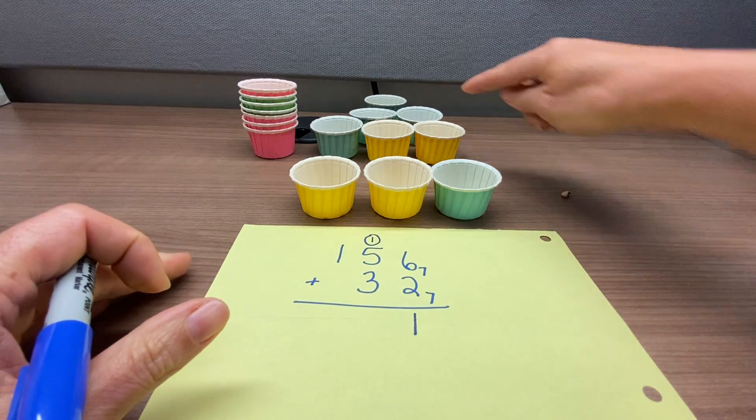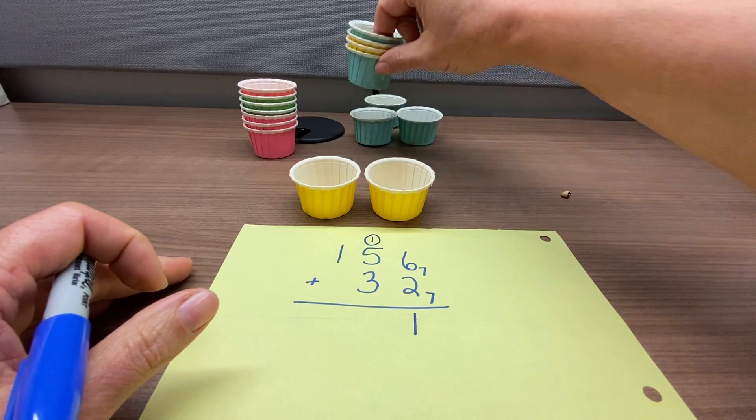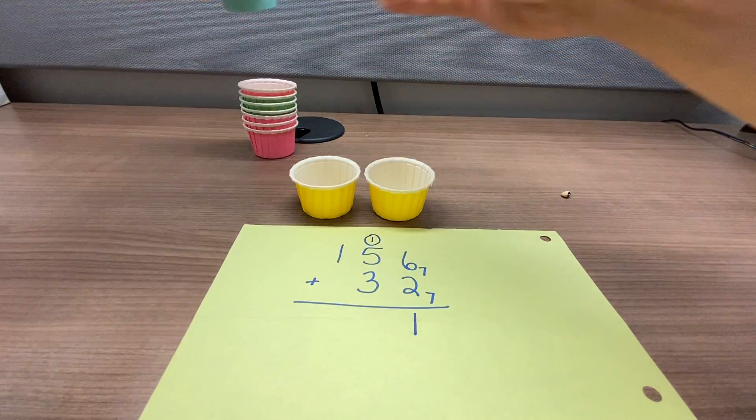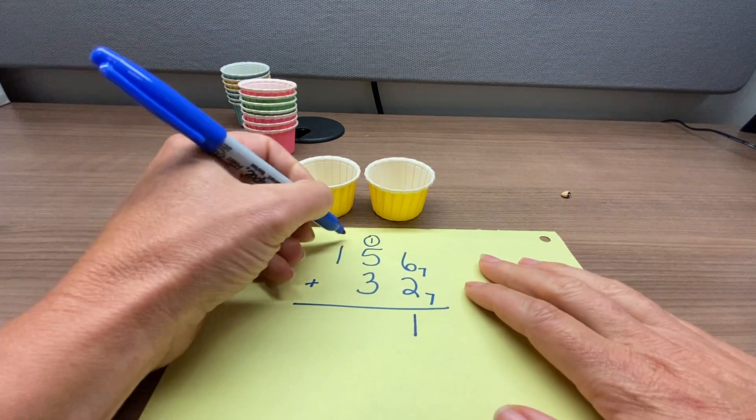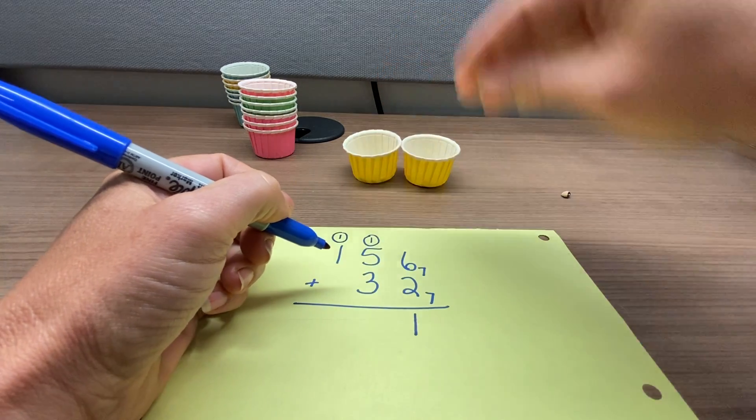Next, we have 6 here, and 1 more here would make 7. So that is enough to go to the next place value. So there's 1 of those in the next place value, and we have 2 cups left of 7 beans.